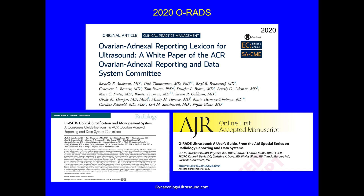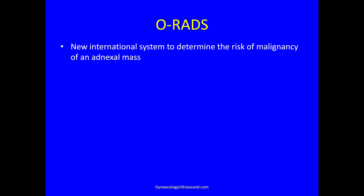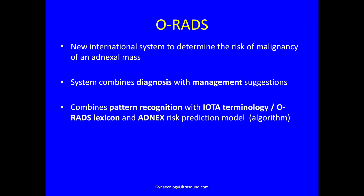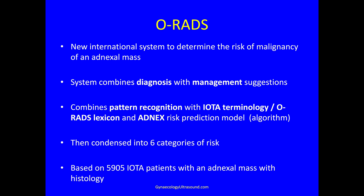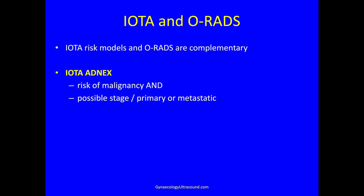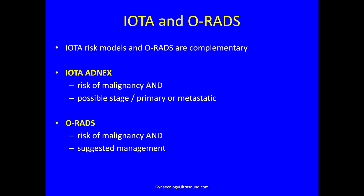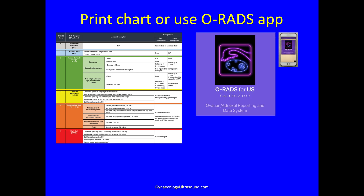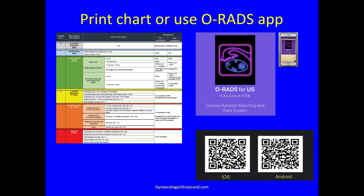Then in 2020, in collaboration with the IOTA group, a series of papers was published on ORADS. ORADS is an international system looking at risk of malignancy, diagnosis, and management suggestions. It combines pattern recognition with the IOTA terminology and the ADNEX risk prediction model. That knowledge is condensed into six categories of risk based on previous IOTA work. ADNEX gives you a risk of malignancy and possible stage, and ORADS also gives you suggested management. The chart can be printed or accessed via an app using QR codes.